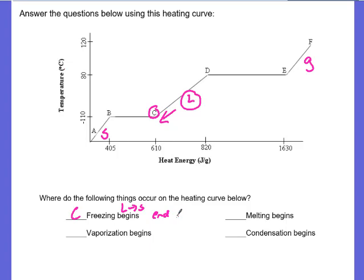If the question said, where does freezing end, it's a liquid, freeze, freeze, freeze, freeze, freeze until it gets to B. Vaporization was going from a liquid to a gas. So, I'm a liquid, there's a gas, so it's going to start at point D.